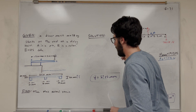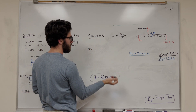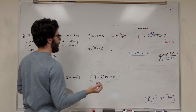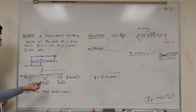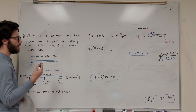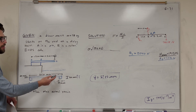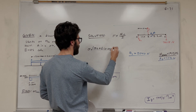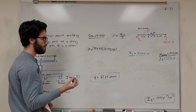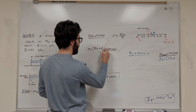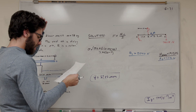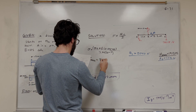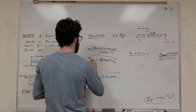Now we go back to our bending stress equation. The maximum moment is 1912.95 N·m. The distance c from the centroid — since the whole thing is 50 mm tall, the furthest we can get from the centroid is 37.15 mm, or 0.03715 meters. Plugging in the moment of inertia of 7.99 × 10⁻⁷ m⁴, we find maximum bending stress equals 88.9 × 10⁶ pascals.